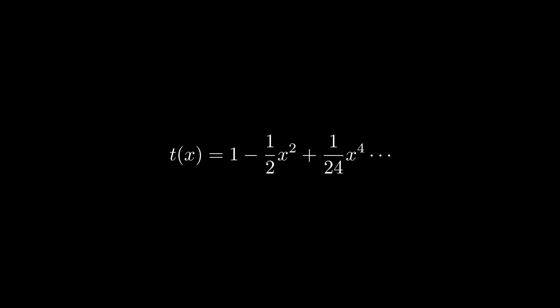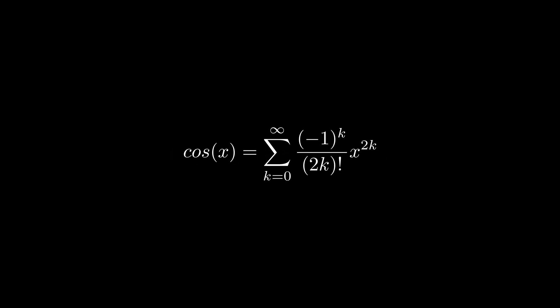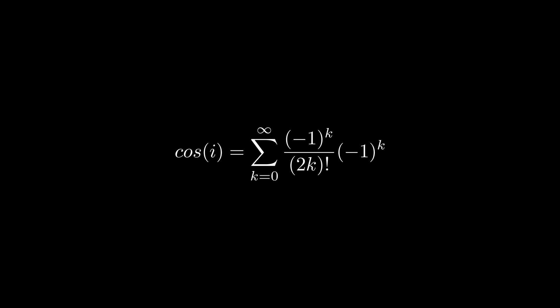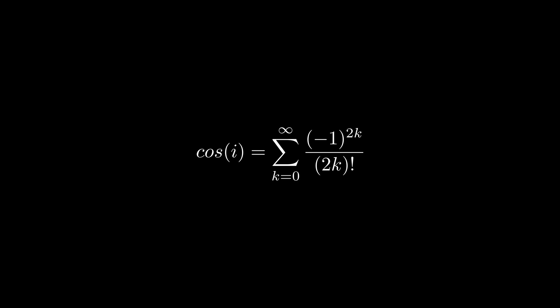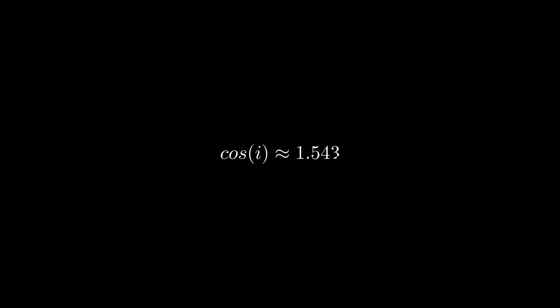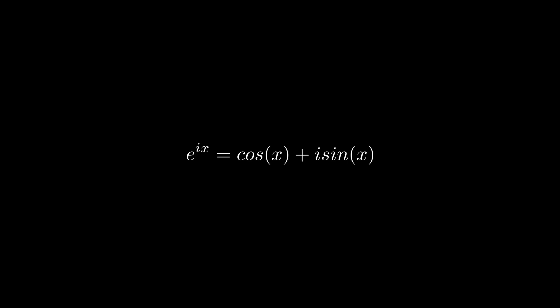It doesn't take too long to spot the pattern here: alternating signs and only even powers of x. Notice the denominator is not just n factorial but (2n) factorial. Rewriting this with summation notation, something interesting happens when we plug in i for x. i to the power of 2 equals negative 1 to the k, but since we have two factors of negative 1 to the k they multiply to just 1, leaving the sum of 1 over (2k) factorial, which sums to about 1.543 — equal to the hyperbolic trig function cosh of 1.